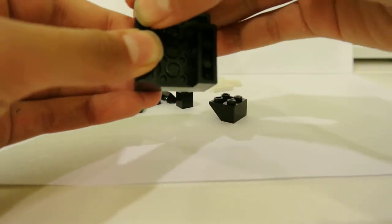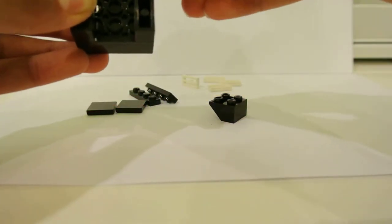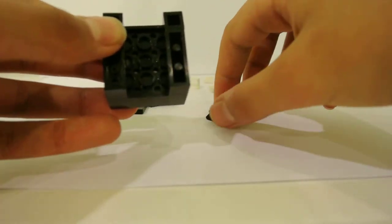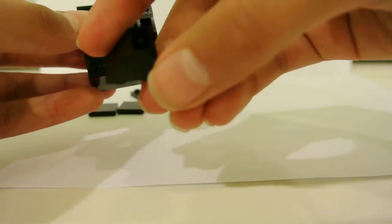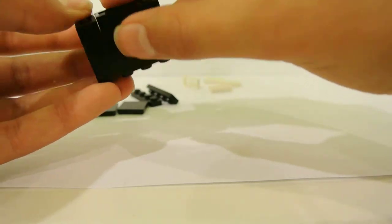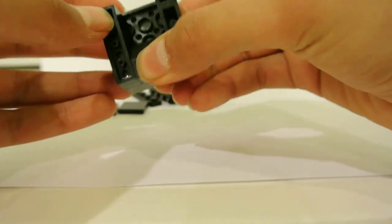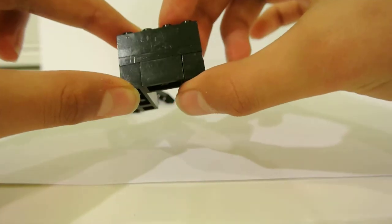Then take your 1x1 bricks and put them in the gap left by the 1x3s. Then take your inverted slope and turn it like that and place it in. So now the back of your piano is completely flat.